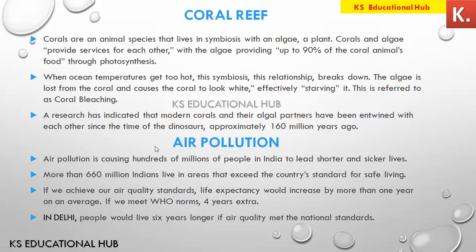Research has shown that the symbiotic relationship between corals and their algal partner is about 160 million years old. This means the relationship has survived many adverse situations and difficult conditions over millions of years. Even when dinosaurs went extinct, this coral-algae relationship continued, suggesting it may also find ways to survive global warming.